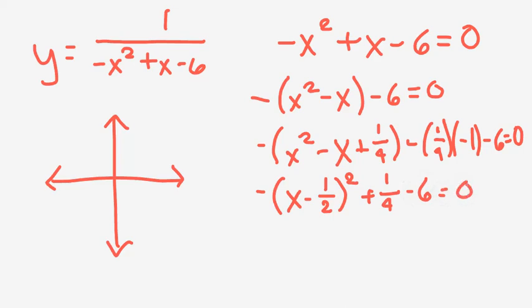I'm going to make one little change here. 1 over 4 minus 6. That's going to get me a negative number. It's going to be negative 23 over 4.